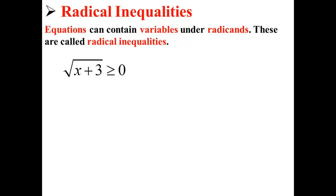Remember that any number under a radical cannot be negative, so whatever our radicand is it has to be at least 0. First we solve for the expression √(x+3) ≥ 0 to see what our minimum x value is. We square both sides to get x+3 ≥ 0, then subtract 3 to get x ≥ -3. So our minimum x value is negative 3.